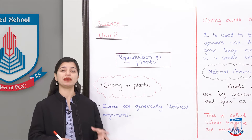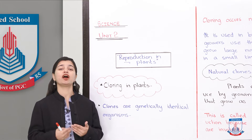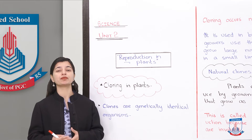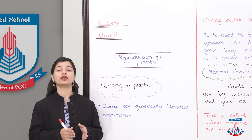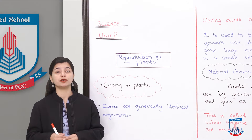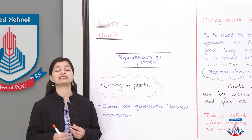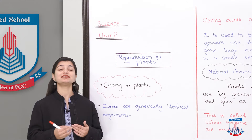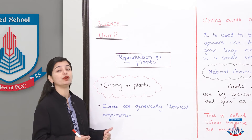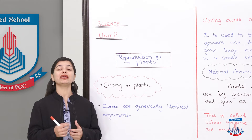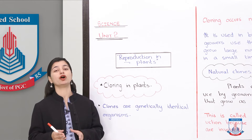Sexual reproduction is what happens when male gametes fuse or fertilize female gametes to create a new offspring or new plant. However, now we will diverge from that topic. We will talk about asexual reproduction, in which male gametes do not fertilize female gametes. We are going to learn about cloning in plants.